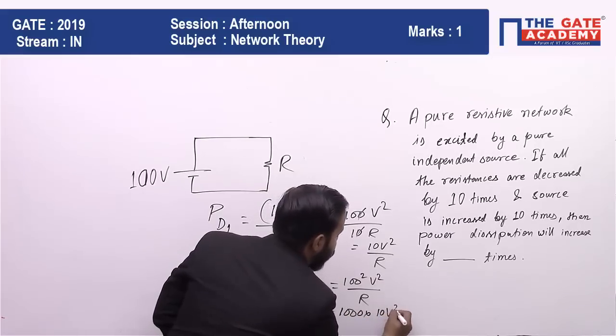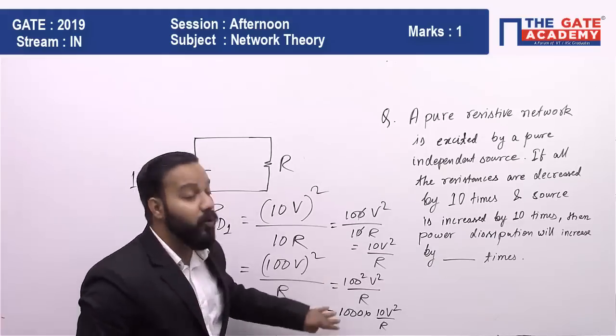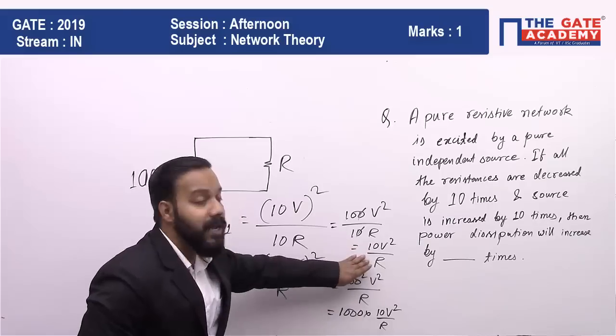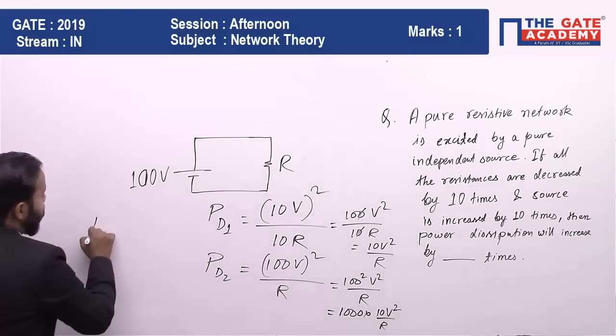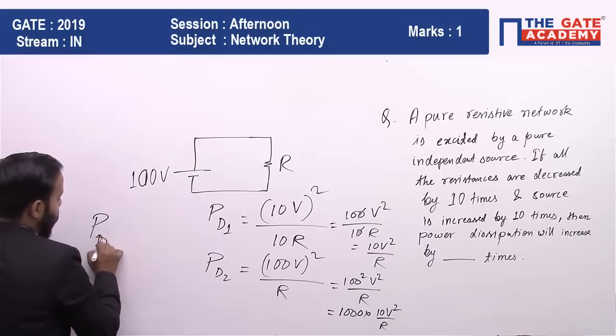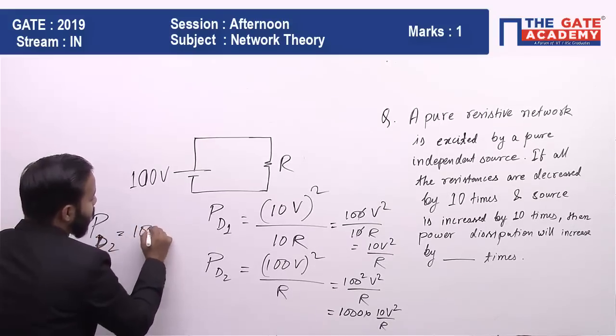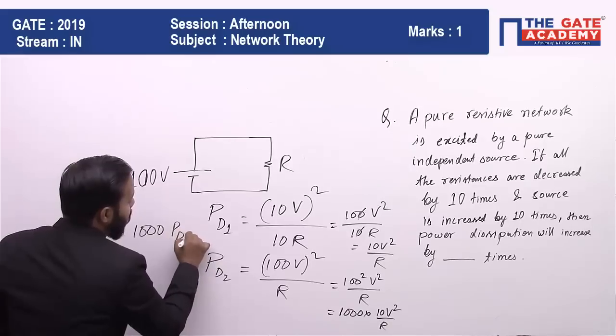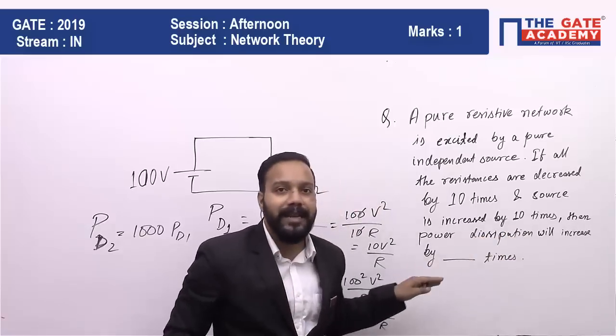This means P_D2 equals 1000 times P_D1. We can see that the power dissipation in the second case, P_D2, equals 1000 times P_D1. The question asked how much the power dissipation will increase by, and the answer is 1000 times.